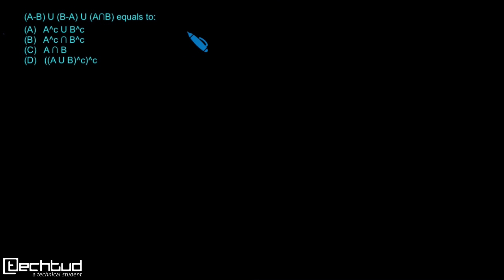Let us first find out what is (A-B) ∪ (B-A) ∪ (A∩B). The best or easiest way is to draw a Venn diagram.